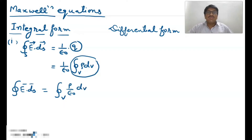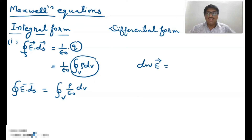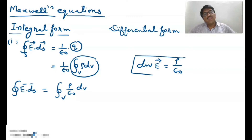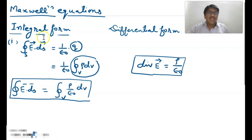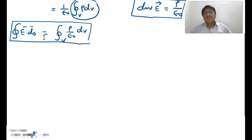The surface integration of electric field equals the volume integration of 1 upon epsilon naught times charge density. This is the integral form of Maxwell's first equation. And if we write this equation in differential form, then we can write: divergence of electric field equals 1 upon epsilon naught times charge density. This is the differential form of Maxwell's first equation.